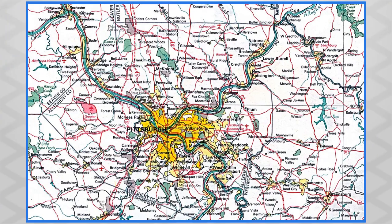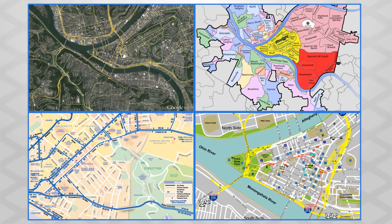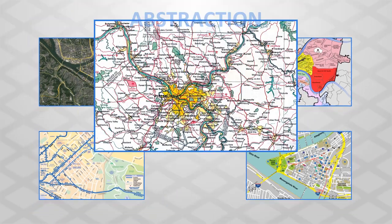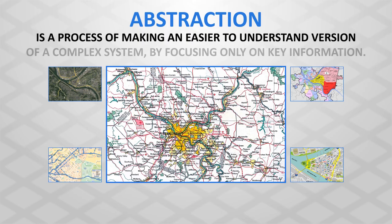All of these maps show the same city, but each map uses the concept of abstraction to remove what is unimportant and focus on what is important to the user. Abstraction is the process of creating an easier to understand version of a complex system by focusing only on key information.